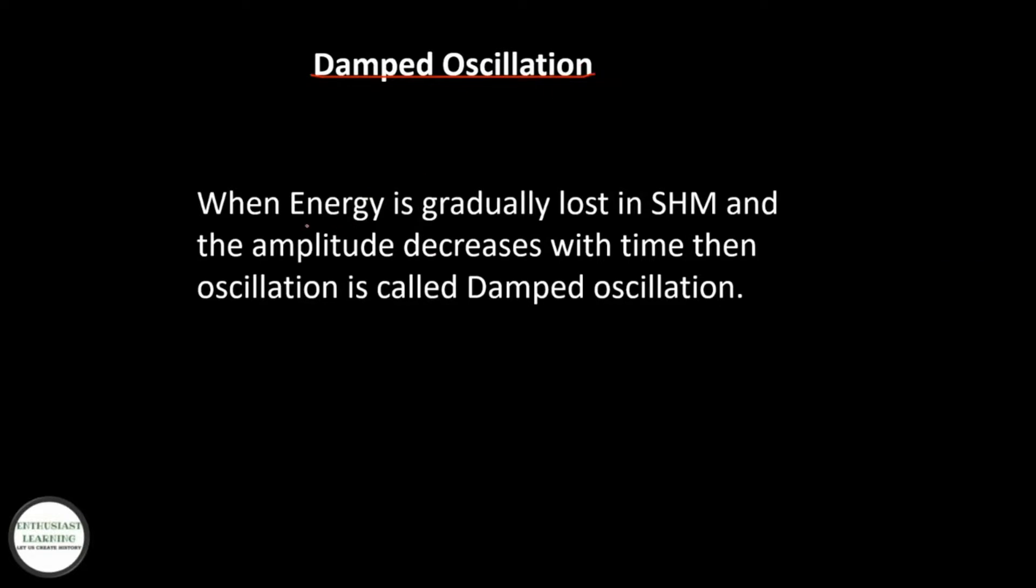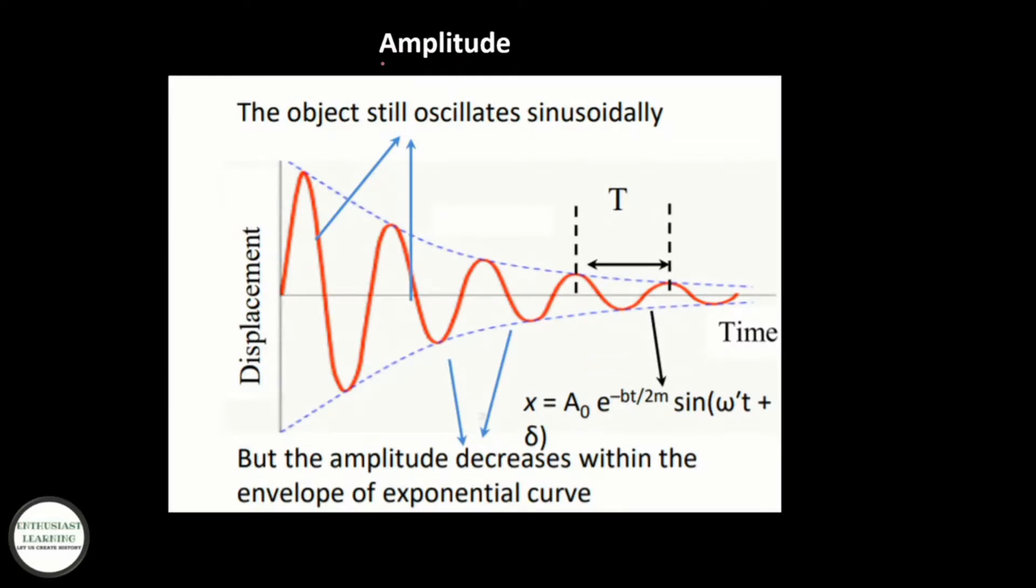Damped oscillations: when energy is gradually lost and the amplitude decreases with time, then oscillation is called damped oscillations. Here is the graph showing amplitude decay.